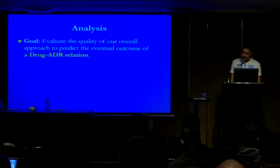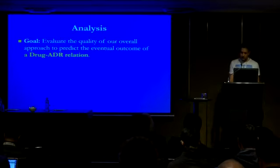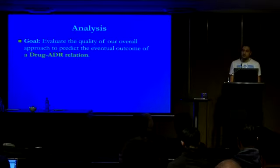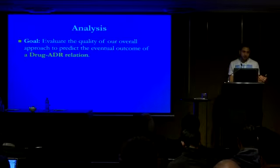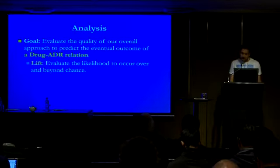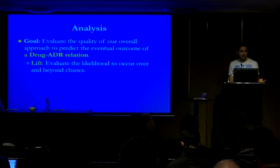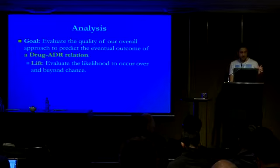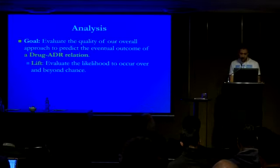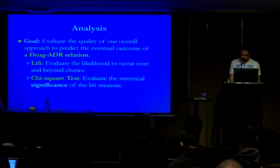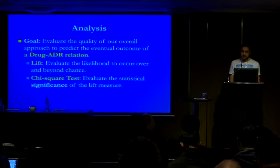For validating the outcomes of our approach to predict drug-ADR relations, we used the LIFT metric, also known as pointwise mutual information. We used it to evaluate the likelihood of a particular drug-ADR relation occurring over and beyond chance. The LIFT metric is open to interpretation with respect to the definition of the population of messages to be included in the denominator, so we applied two different measures of LIFT and then employed the Chi-square test for independence to evaluate the significance of each LIFT measure.